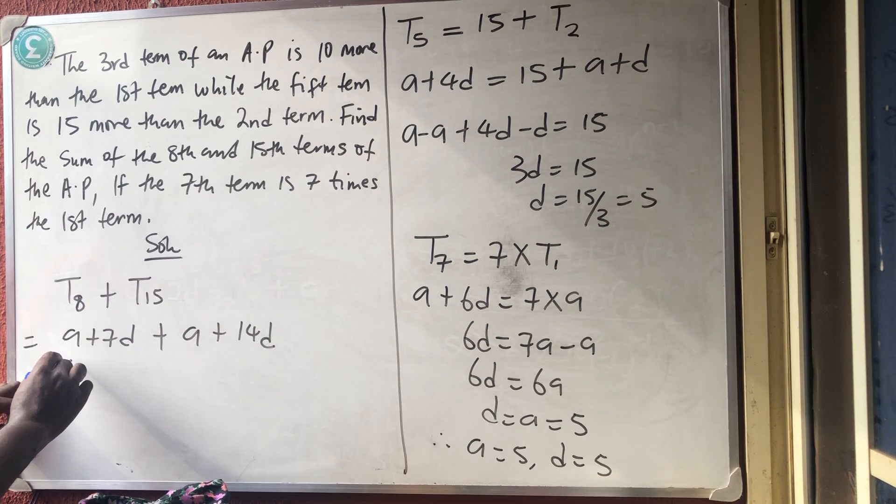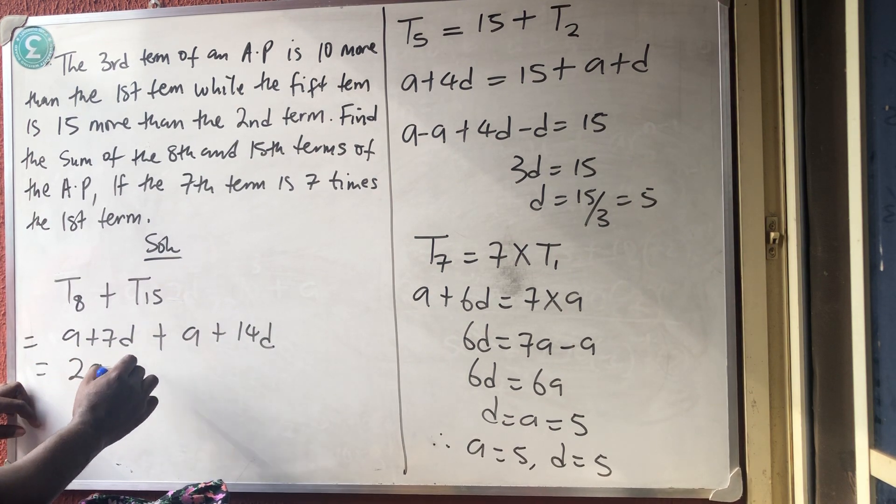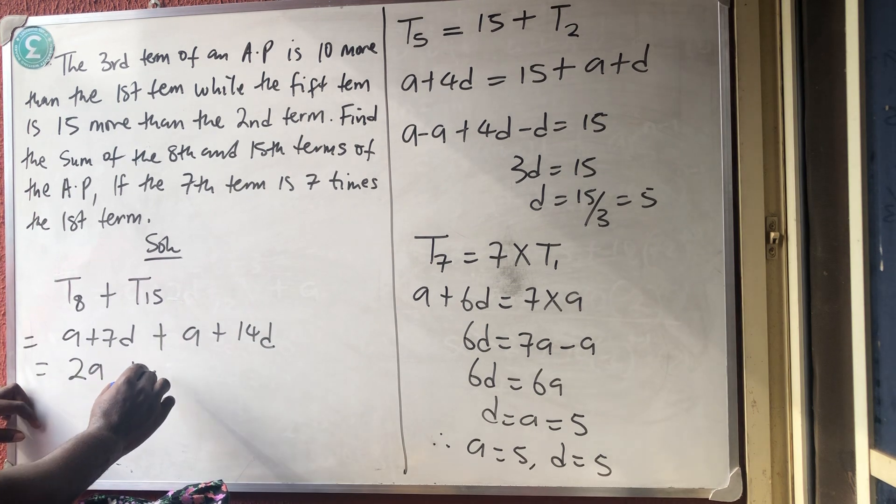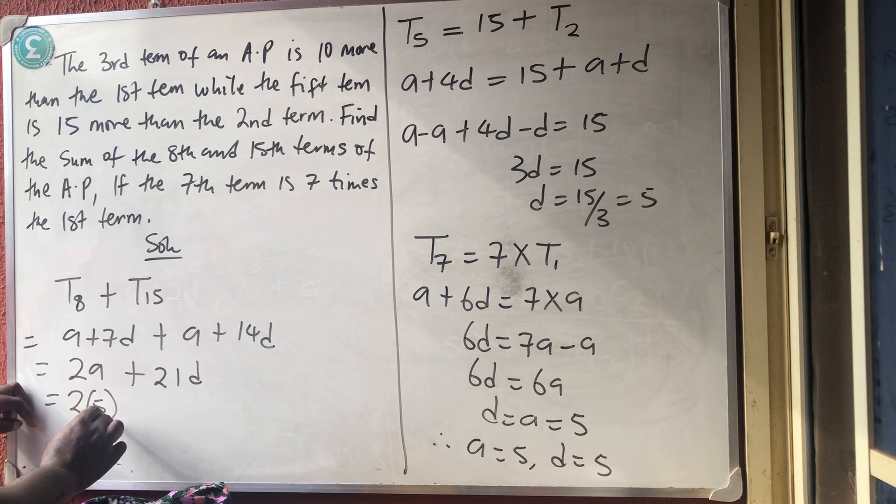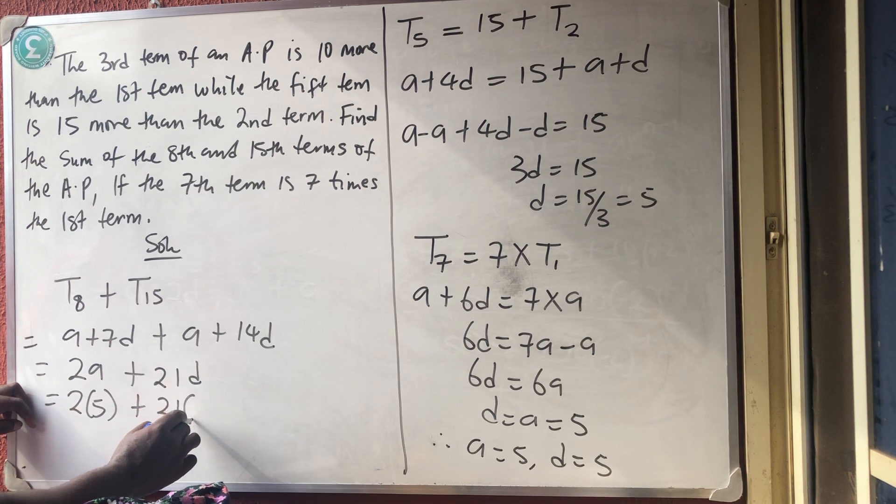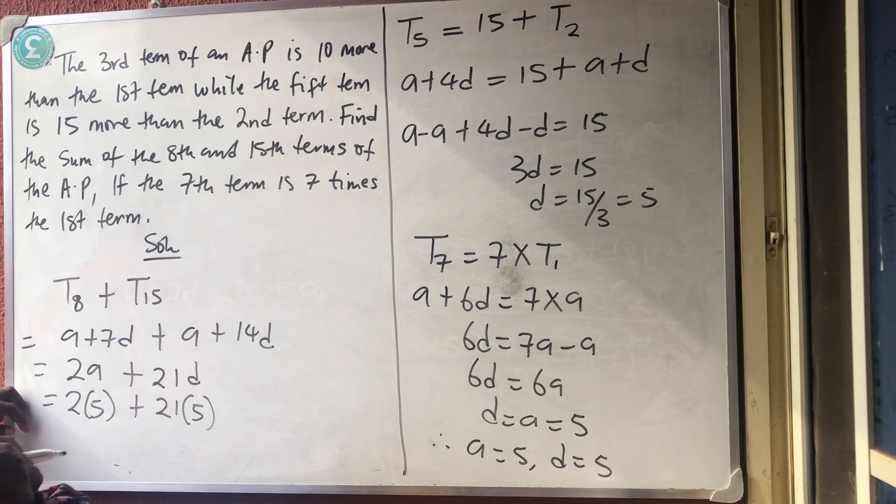If we add them together, A plus A is 2A plus 7 plus 14 is 21D. So, what am I having now? 2 bracket 5 plus 21 bracket 5 because A is 5 and D is 5.